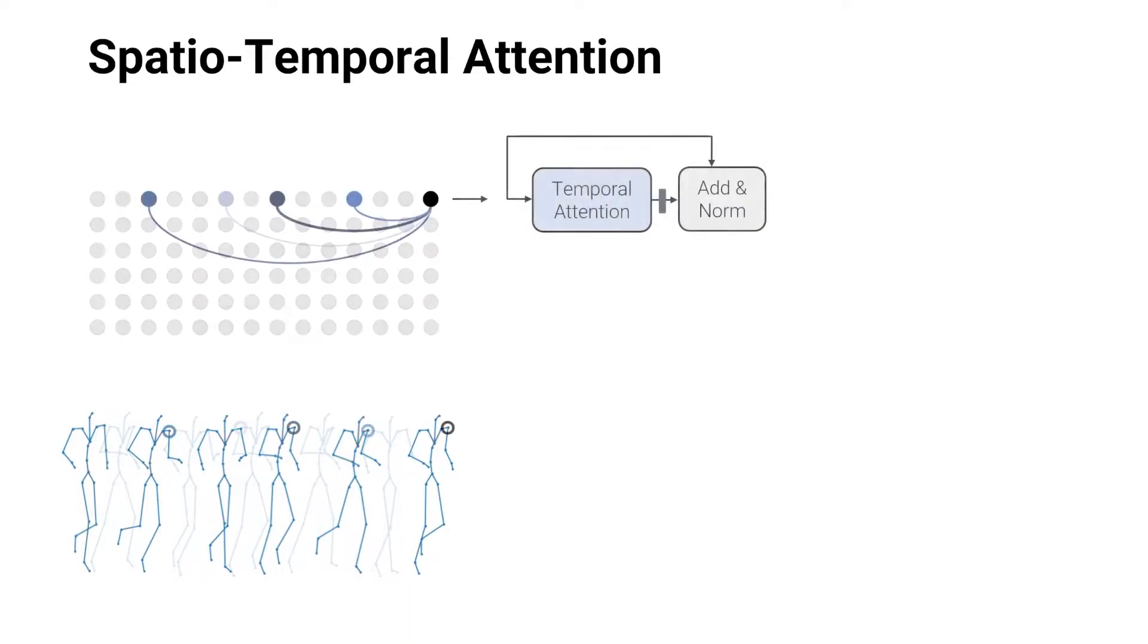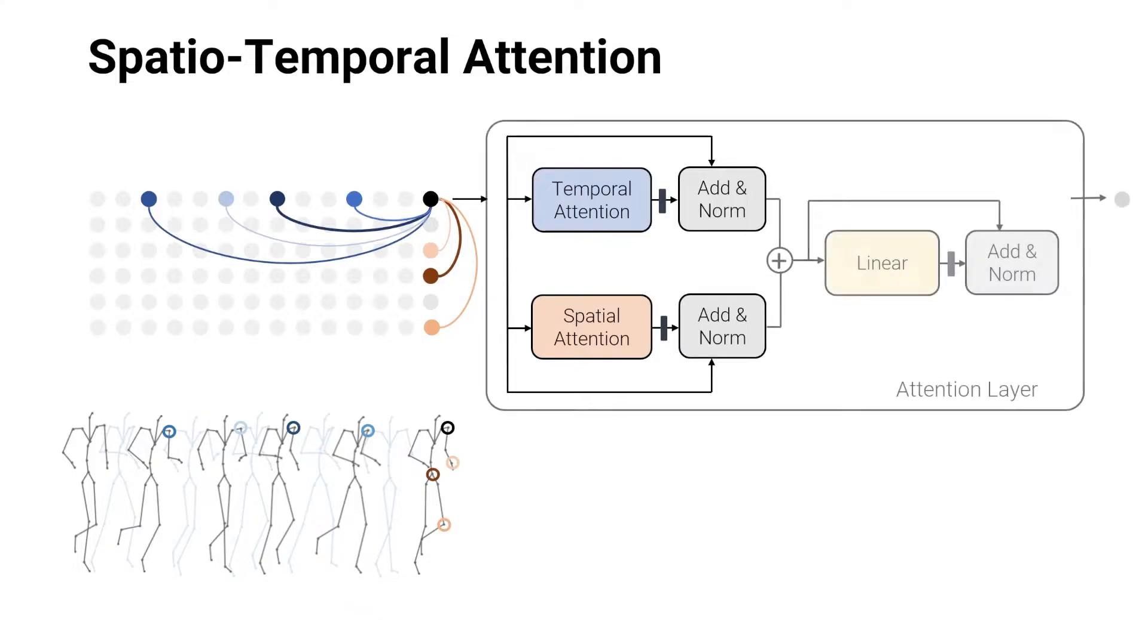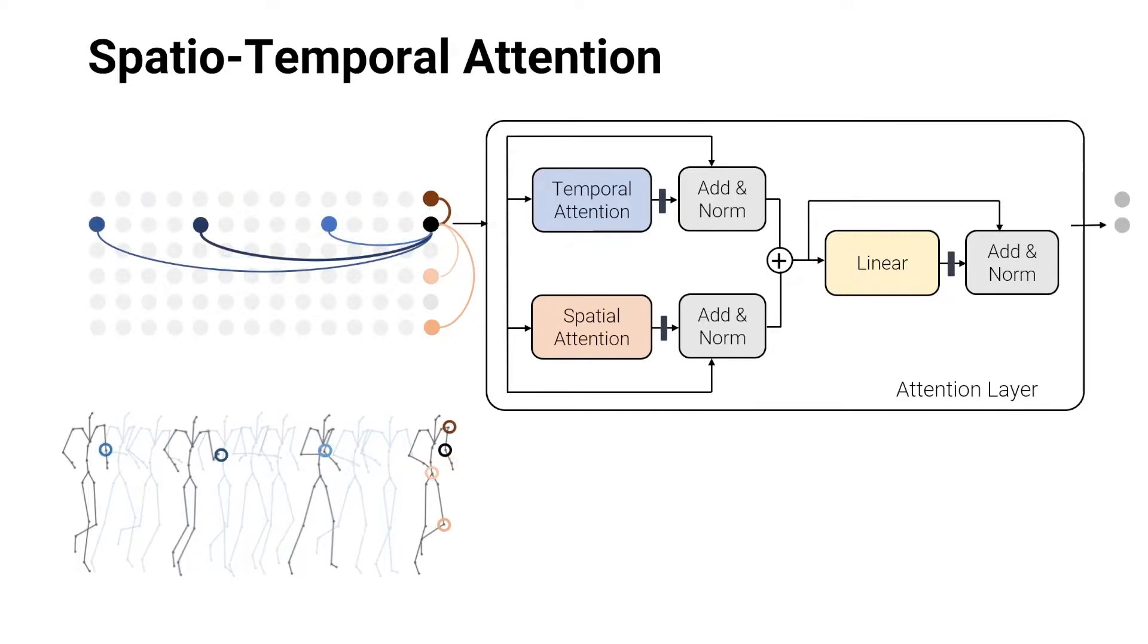While the temporal attention focuses on distilling information from previous states of a specific joint, the spatial attention pathway models the dependencies among the joints within one time step. The two attention blocks operate in parallel to identify the most informative components and aggregate this information to update the joint representation.